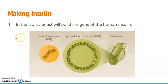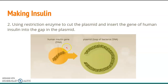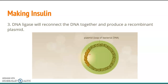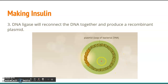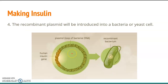The first step in the lab: scientists build the gene for human insulin. Then we obtain a small plasmid from a bacterium. Using the restriction enzyme, we cut the plasmid and insert the synthesized DNA into the gap of the plasmid. DNA ligase reconnects the DNA together to produce a recombinant DNA plasmid. This recombinant plasmid is then introduced into a bacteria or yeast cell.